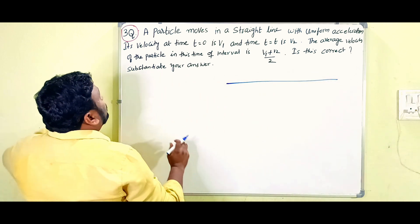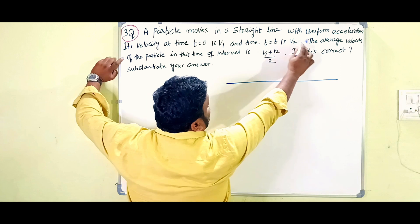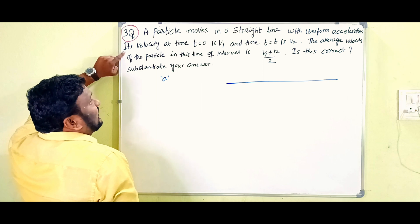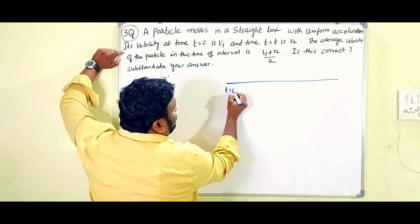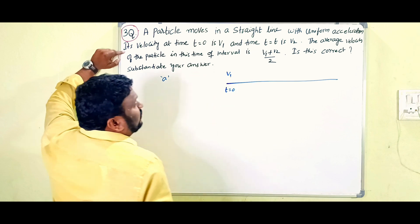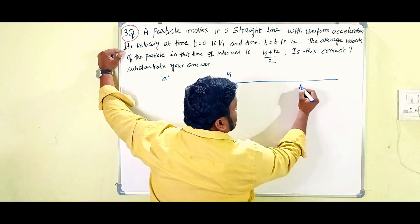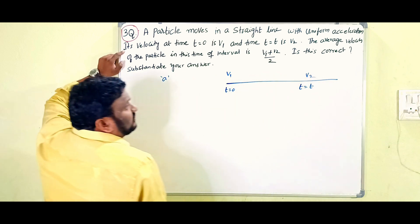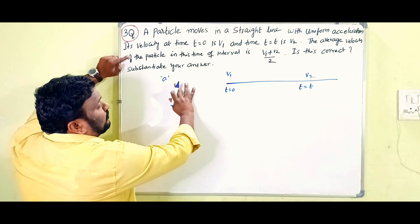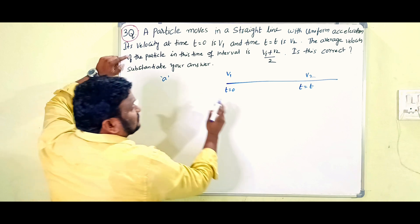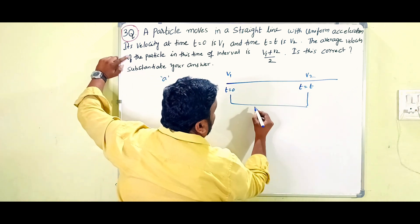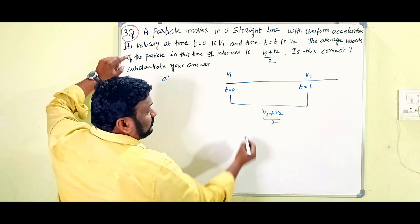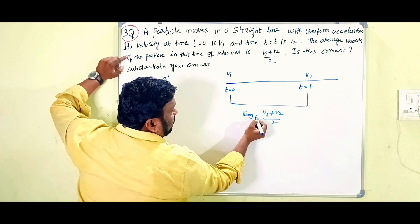So the particle moves in a straight line with uniform acceleration. Its velocity at time t equals zero is v1, and after some time t equals T the velocity is v2. The average velocity of the particle in this time interval is claimed to be (v1 + v2)/2. We need to verify whether this average velocity expression is correct.